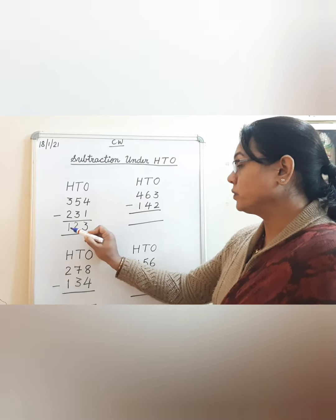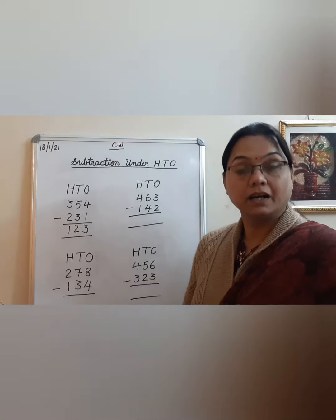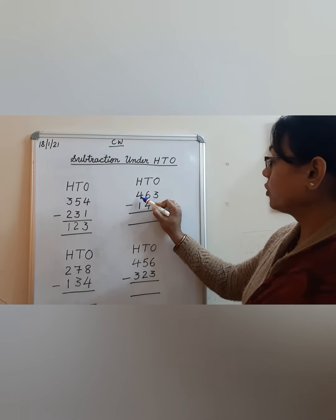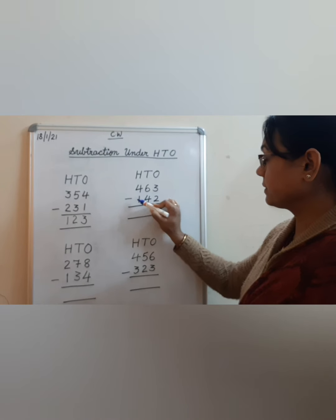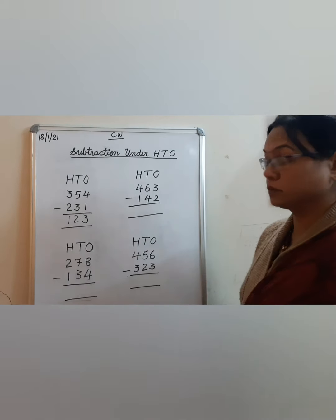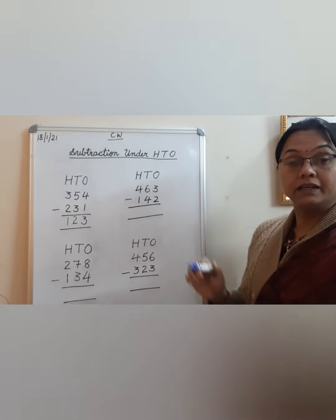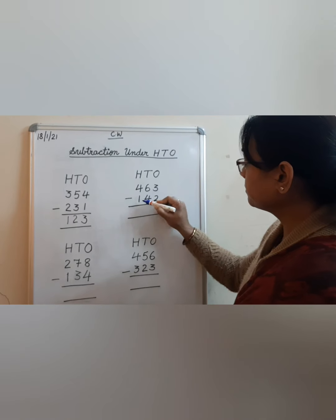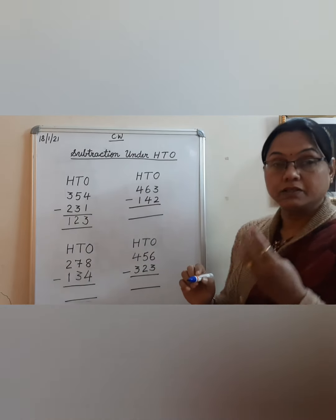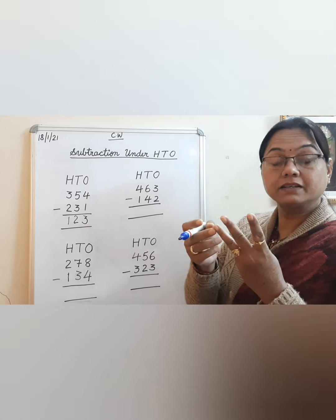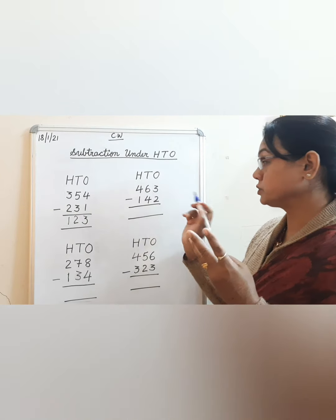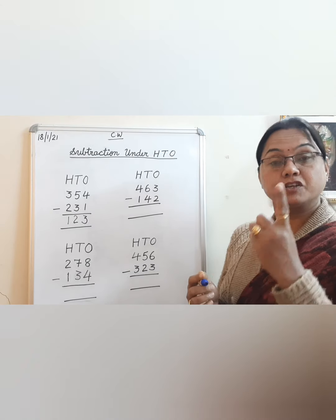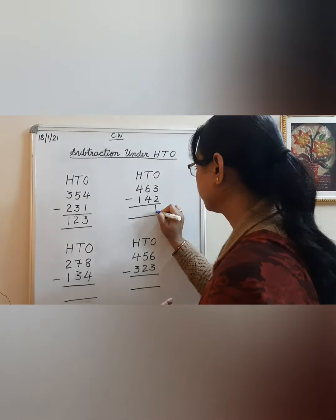123 is our answer. Now let us move to the next sum: 463 minus 142. Again we will start from the ones place. Here you can see 3 minus 2 is written, so take out 3 fingers and subtract 2 — 1 and 2 — how many are left? 1, so write 1.